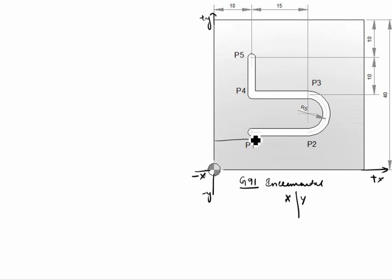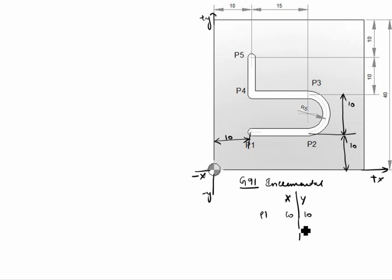In absolute command we saw the value was 10, so this value is also 10 here and this value also 10. X is 10, Y is 10 for P1. After that we go to P2 — here to here only we take the value. X is 15 (it goes in the plus direction, so plus 15). What is the Y value? Y starts from here, so Y is 0. X is 15, Y is 0 for P2.